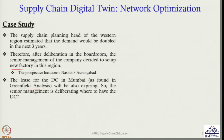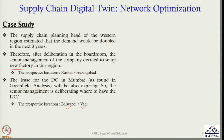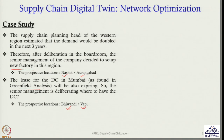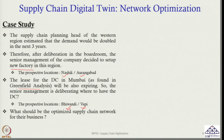So the senior management is deliberating where to have the distribution centre. The prospective locations are Vapi and Vapi and Vivandi. They have two prospective locations for the factory and two prospective locations for distribution centres. The question is: what should be the optimised supplier network if demand becomes doubled in the next three years?